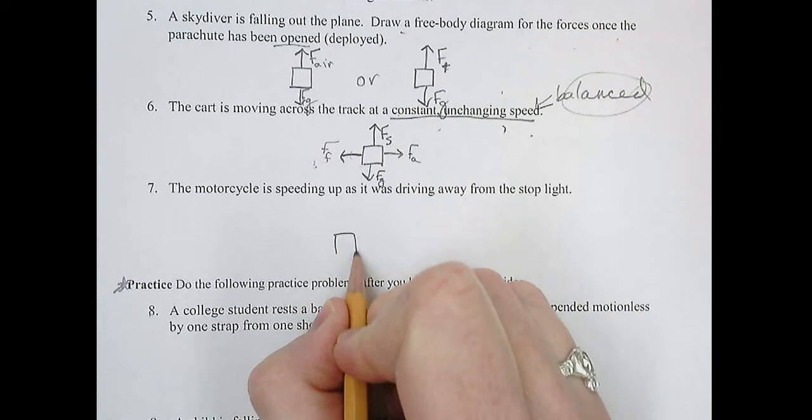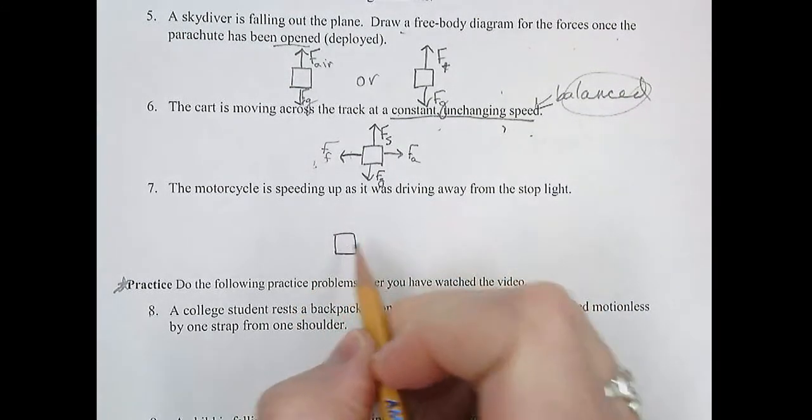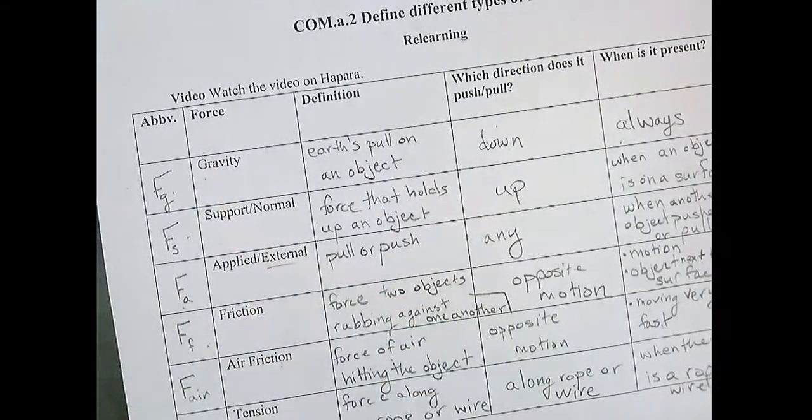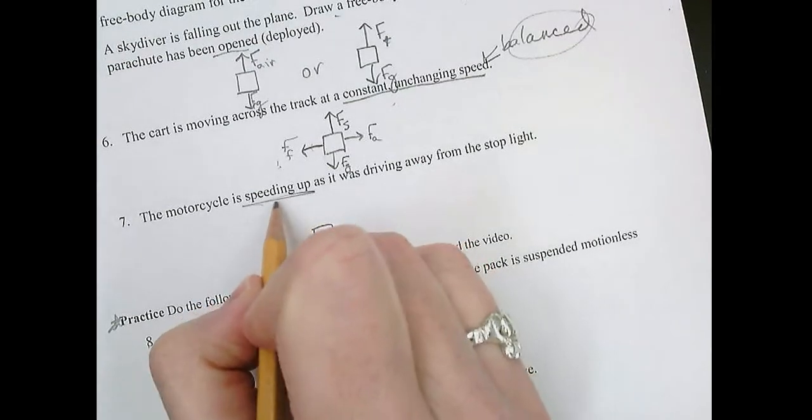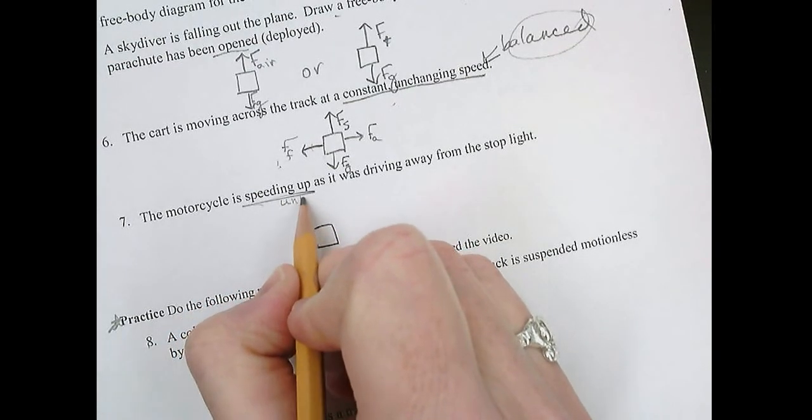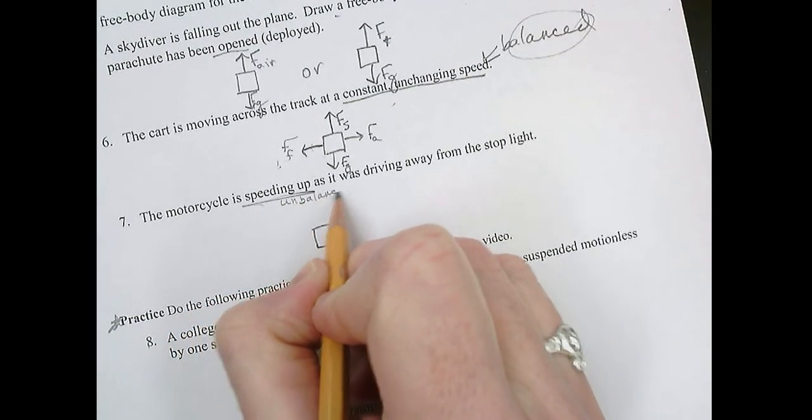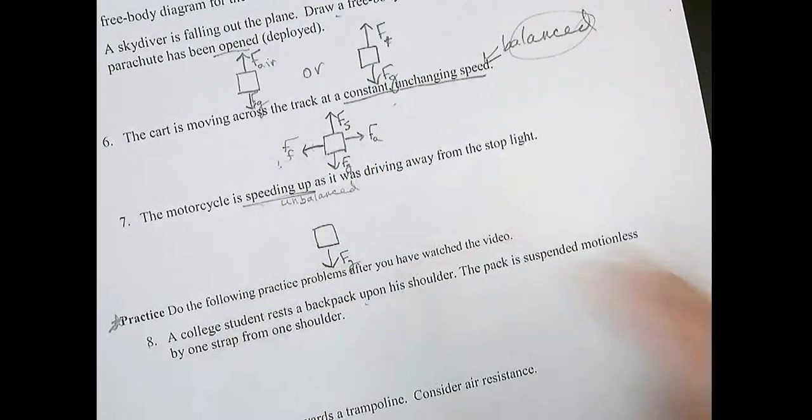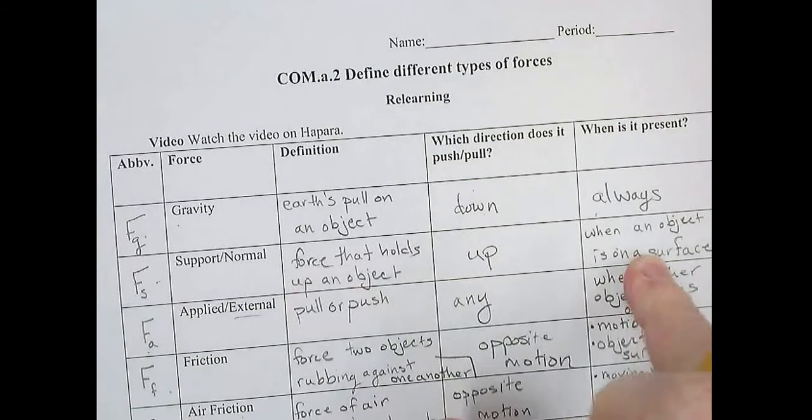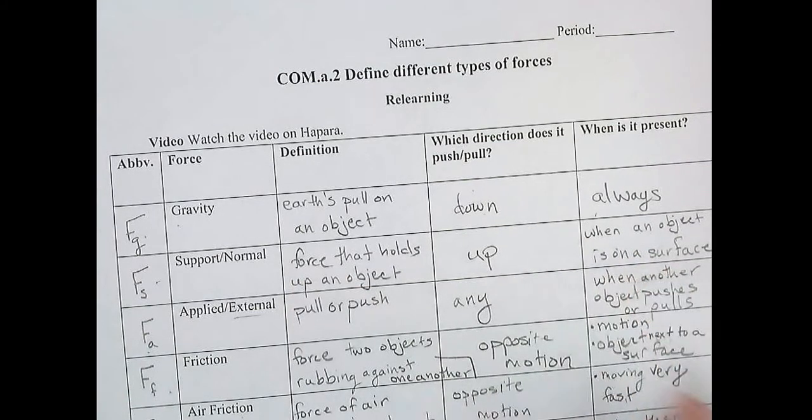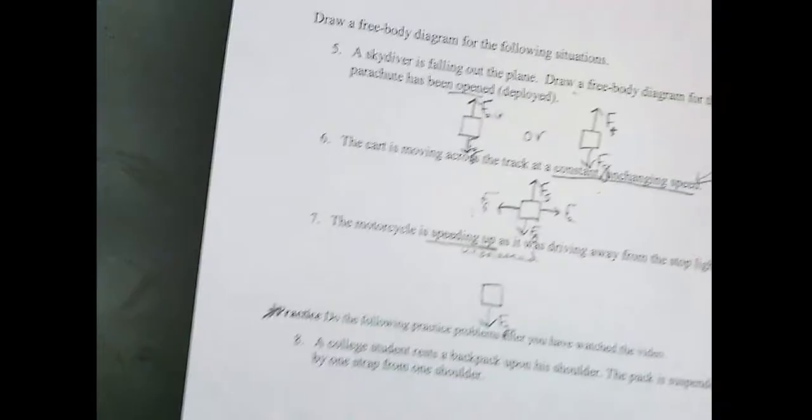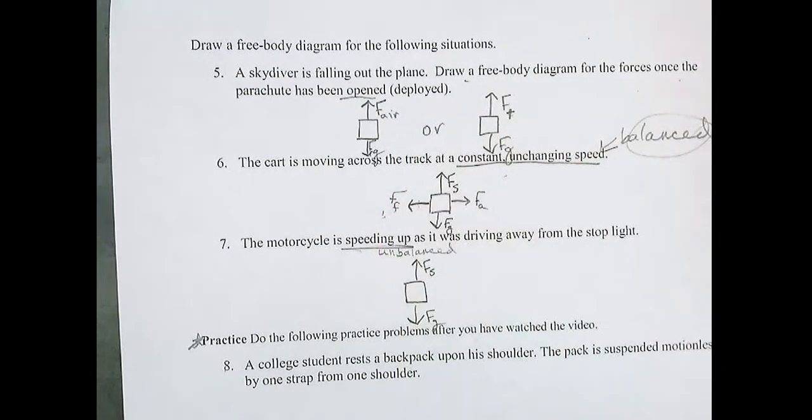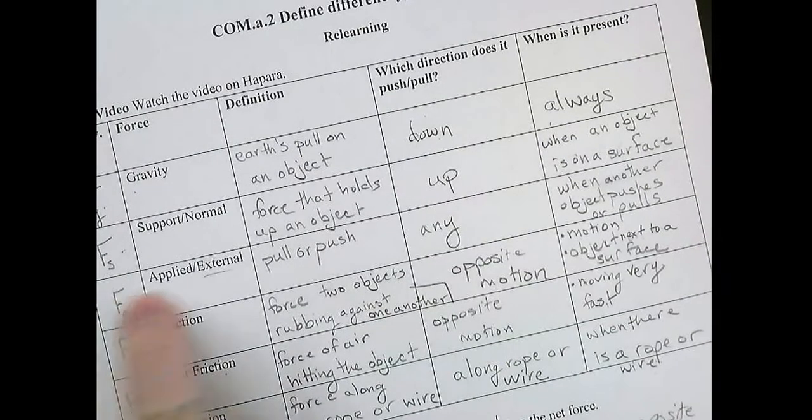Last but not least, motorcycle speeding up as it was driving away from the stoplight. Stoplight, gravity. Oh, this speeding up thing is really important. That means that they're unbalanced. It's accelerating. There's always gravity, so we'll start by doing that. Is there, is the object on a surface? Yes, the motorcycle's on the ground. Is there an applied force? Another object pushes or pulls?